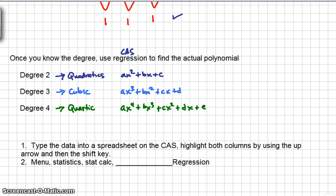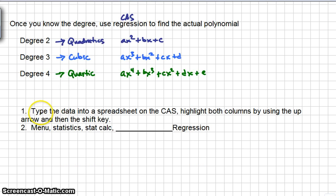Once you know the degree and you know what type of regression you're going to be using, then you can type your data from the original table into a spreadsheet, highlight both columns using the up arrow and the shift key, then choose menu, statistics, stat calculations, and the type of regression that you've decided. And the calculator will generate your a's, b's, c's, and so on for you.